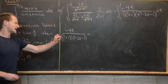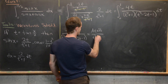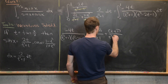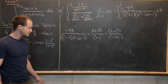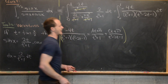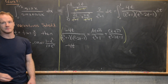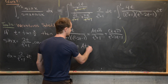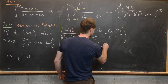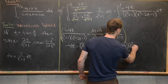We decompose minus 4t over (t squared plus 1)(t squared minus 2t minus 1) into At plus B over t squared plus 1, plus Ct plus D over t squared minus 2t minus 1. Multiplying through by the full denominator gives minus 4t on the left, and on the right: (At plus B)(t squared minus 2t minus 1) plus (Ct plus D)(t squared plus 1).